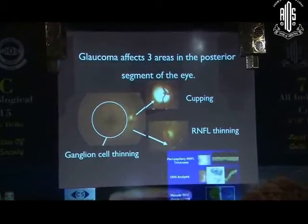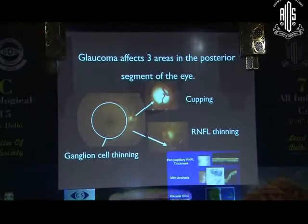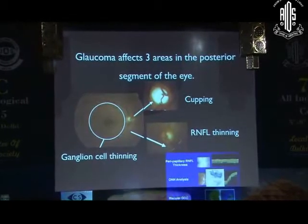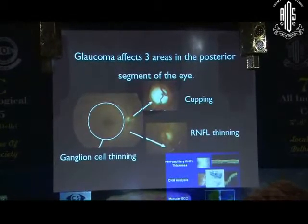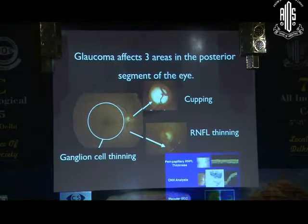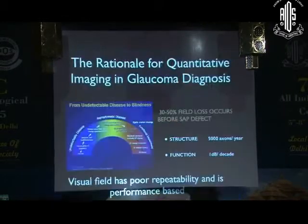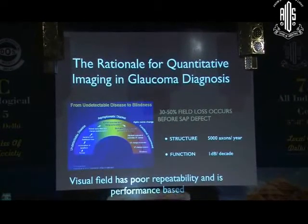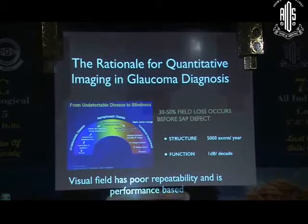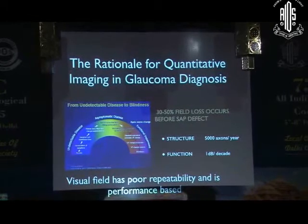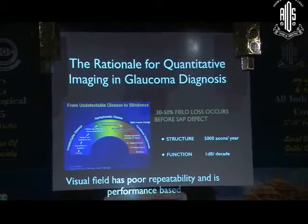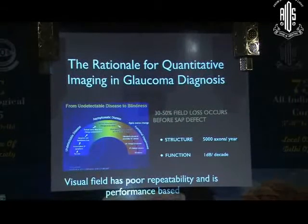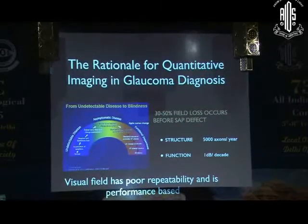The possibility of picking up early structural changes at the ganglion cell layer and retinal nerve fiber layer has made it a very exciting tool to detect early pre-perimetric glaucoma or to detect early changes or progression in established cases of glaucoma.